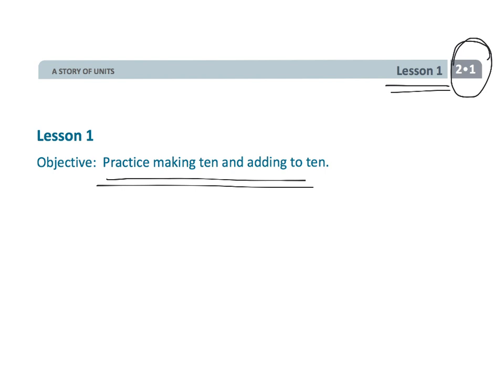Specifically we're going to be using number bonds where the whole is made up of two parts. For example, we might have a five here, and this might be a two and a three. So let's get going.